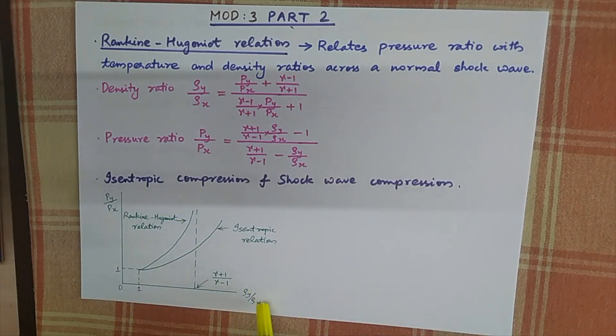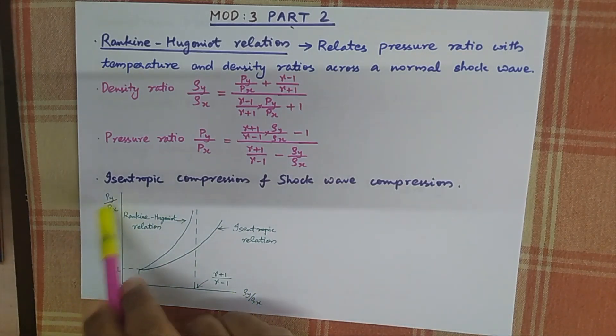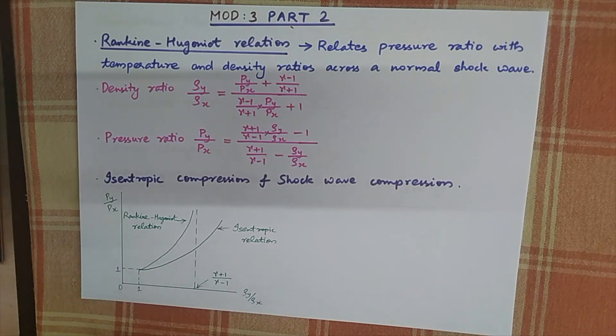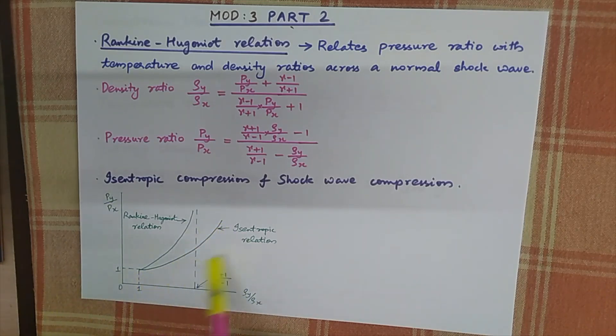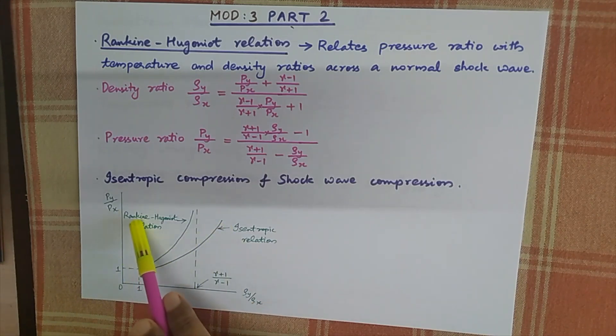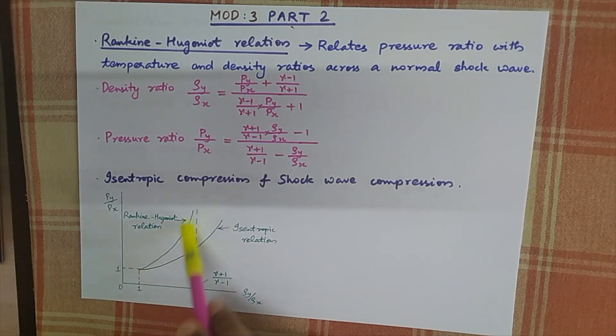The x-axis is the density ratio and the y-axis is the pressure ratio. We plot two curves on this graph: one for the isentropic relation and one for the Rankine-Hugoniot relation.